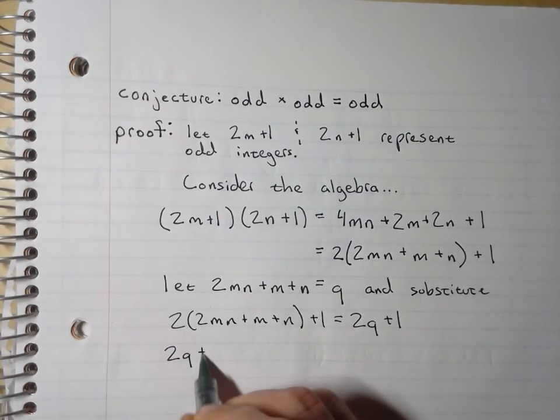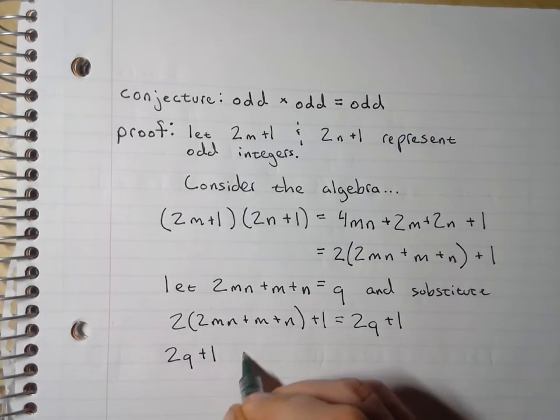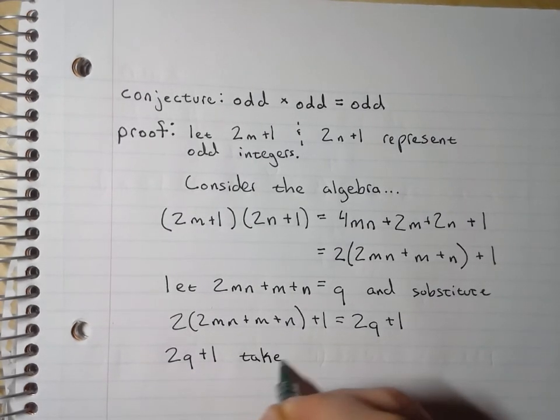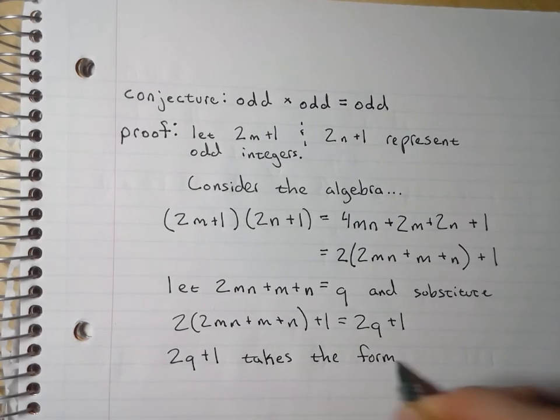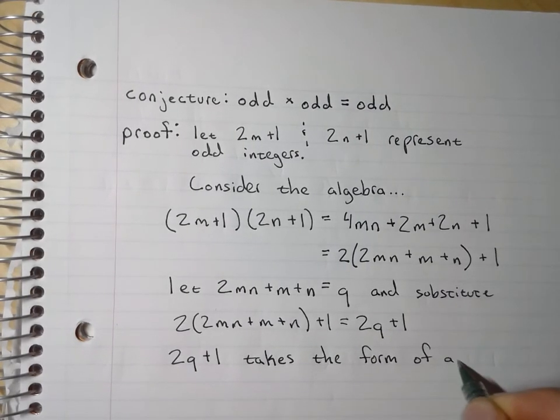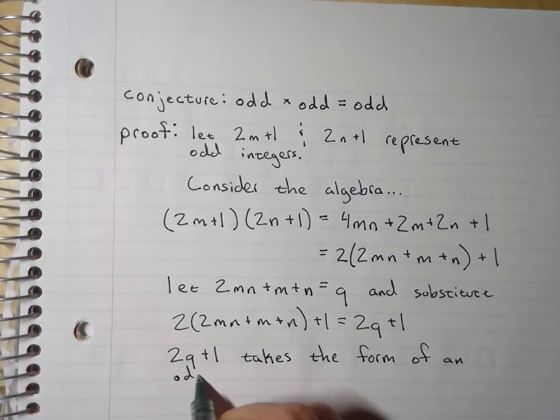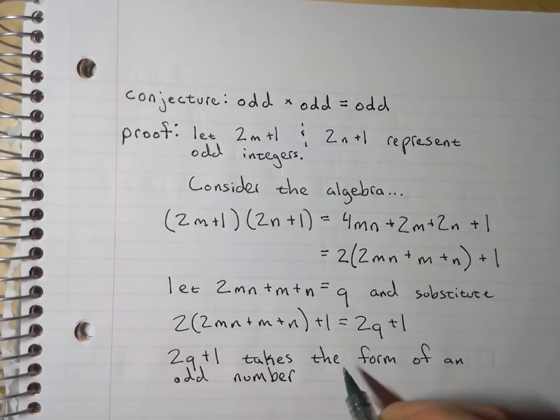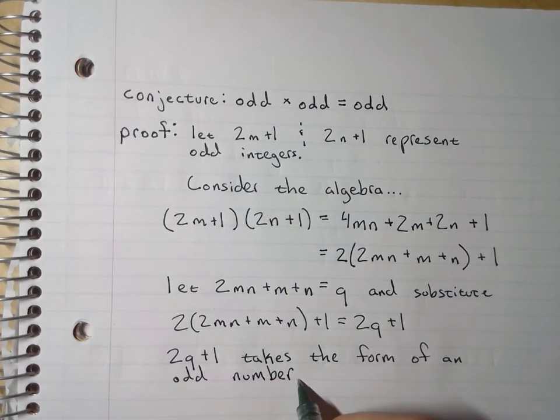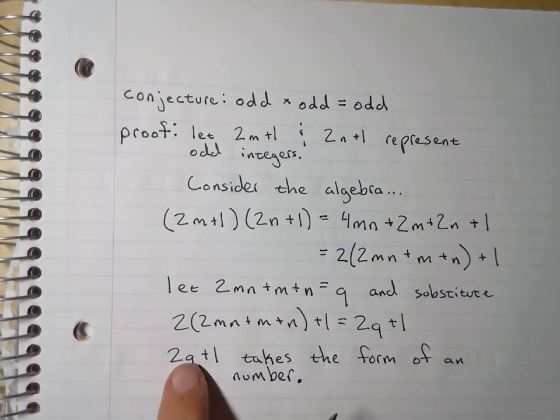2q plus 1 takes the form of an odd number - 2 times any integer plus 1.